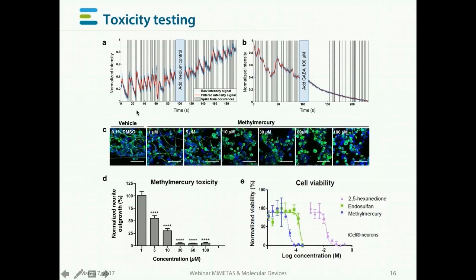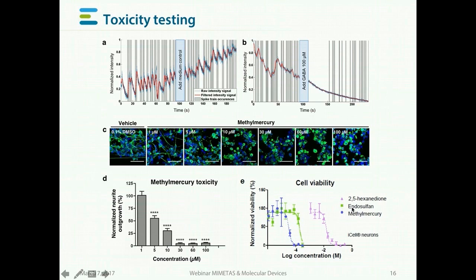These models are perfect for neurotoxicity assessment. We add a concentration series of methylmercury to cells that have formed a neuronal network, and upon increasing concentration of methylmercury, the neurite extension dramatically goes down. This can be quantified using automated procedures to get a nice dose-response graph versus concentration of methylmercury. We can also look at cell viability with three canonical neurotoxicants: 2,5-hexanedione, endosulfan, and methylmercury, using standard off-the-shelf kits.